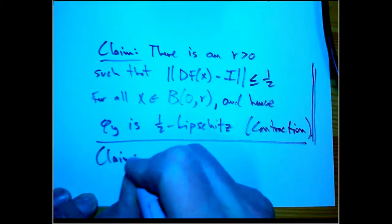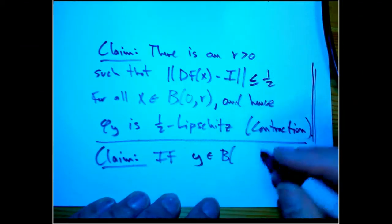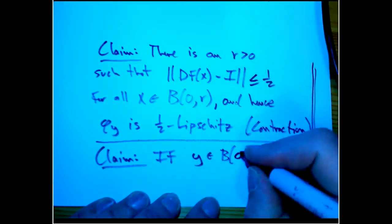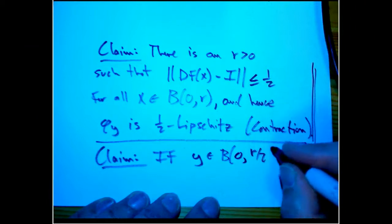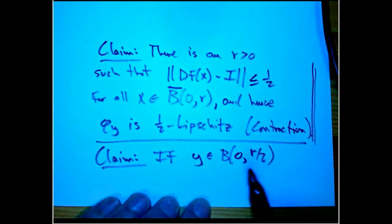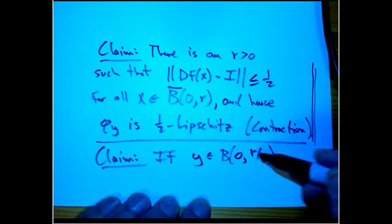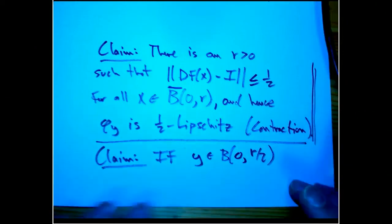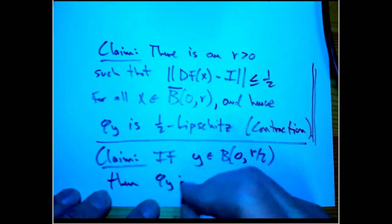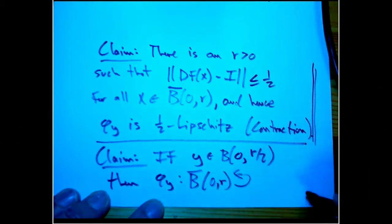Another claim that's really easy to show is as long as we pick y, let's take this guy, this is going to be our crucial thing. The ball, let's say this is in the closed ball because we really want to be able to have a closed set mapping to itself. Suppose we take y a little smaller, a little closer to zero than that. Then I claim a pretty easy calculation tells you that φ_y maps that closed ball of radius r to itself.